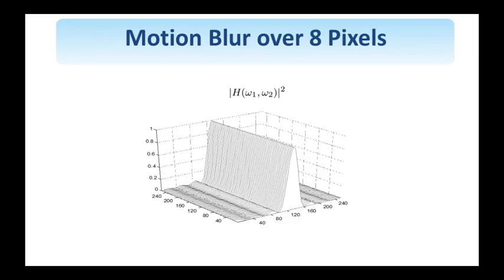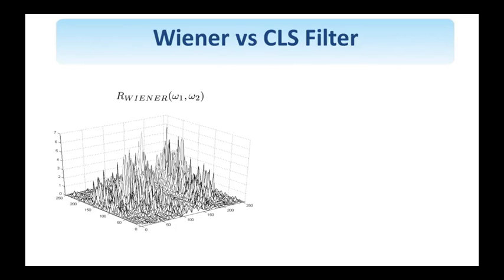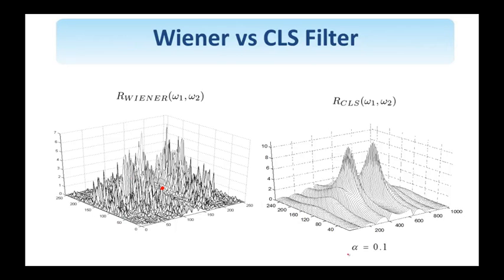We used the same degradation system throughout this material on image restoration: horizontal motion between the camera and the scene over 8 pixels. What we show here is the magnitude of the frequency response of the degradation system — it's a rectified sinc, constant along one of the frequency axes. We see here the frequency response of the Wiener restoration filter for these parameters. It's the inverted sinc function, but with the stabilizing term added in the denominator, so it tapers off at high frequencies. We compare this with the CLS filter for this value of the regularization parameter — its structure is more clear since the frequency response is considerably smoother.